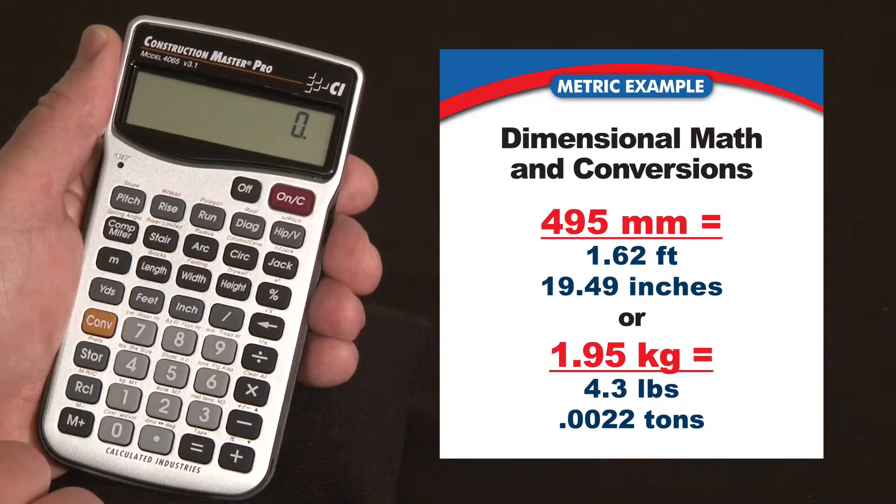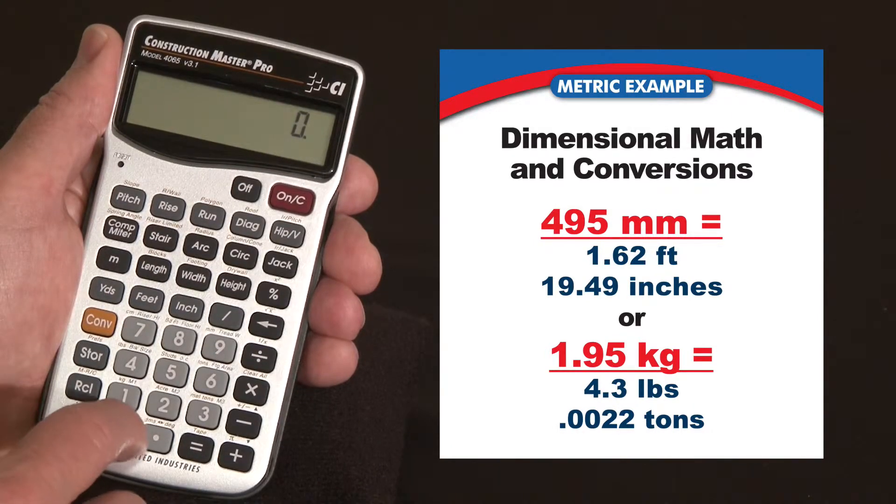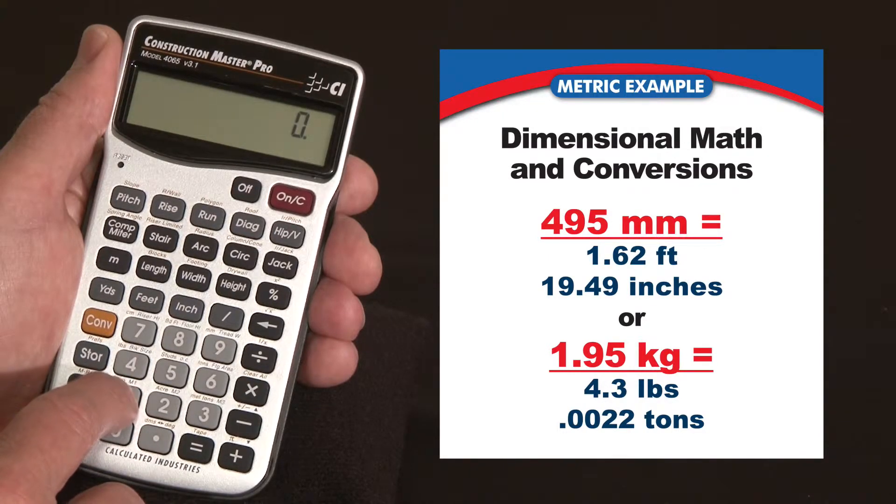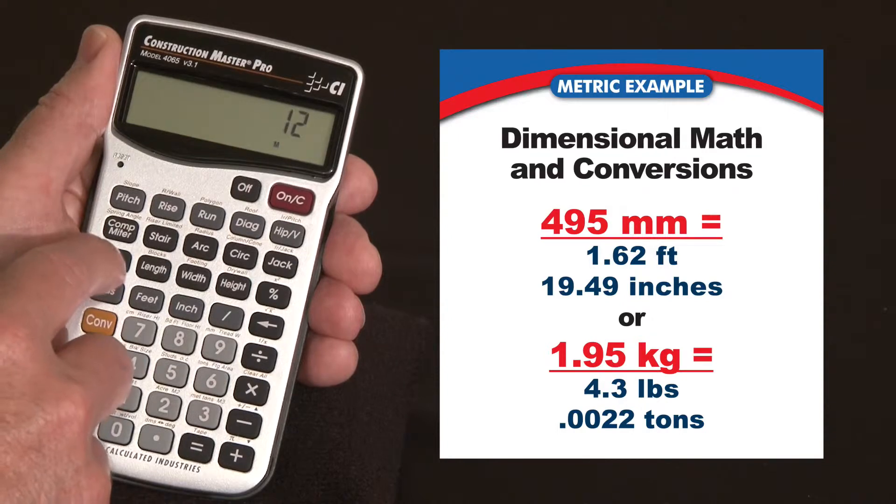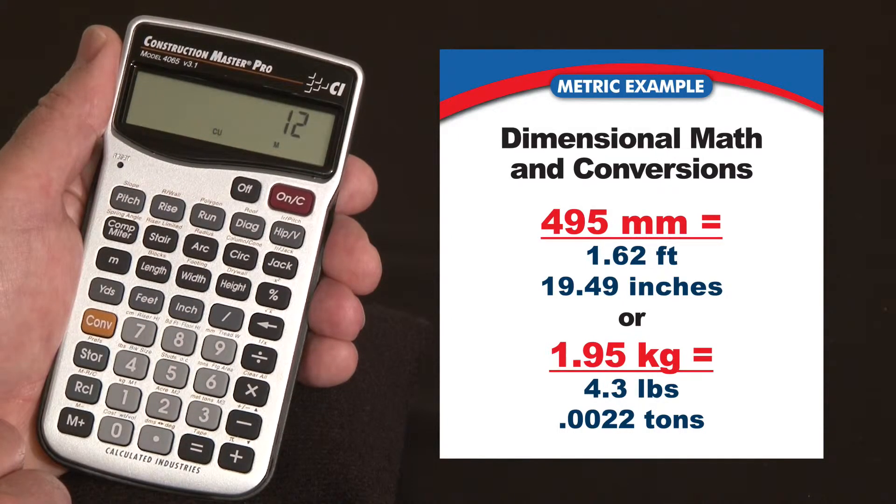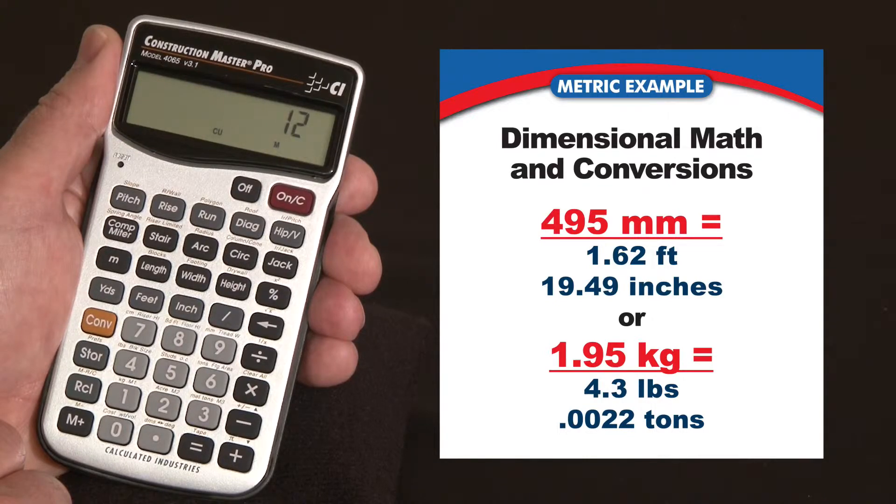You can also directly enter square or cubic values. For instance, if you know something is 12 square meters, you'd say 12 meters once is linear, meters twice is square area, and the third time would actually be a cubic meter. So you can enter things in directly that way as well.